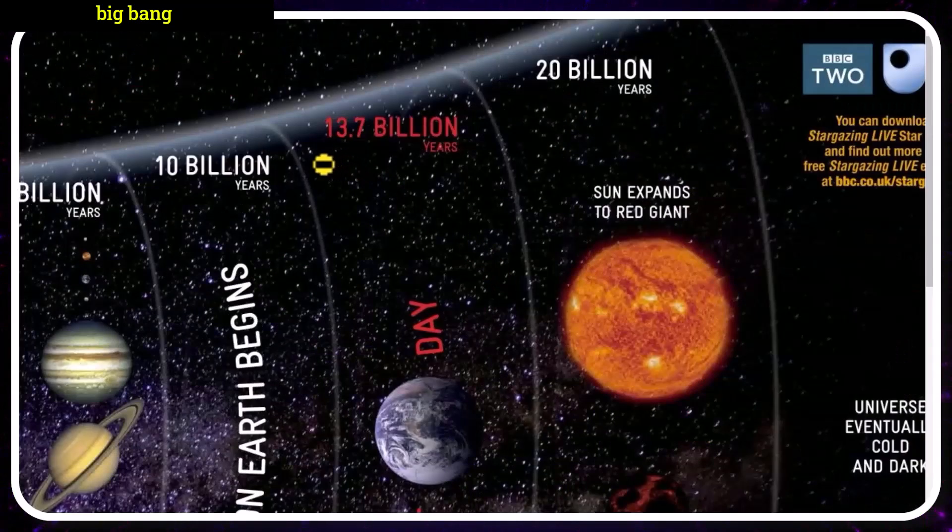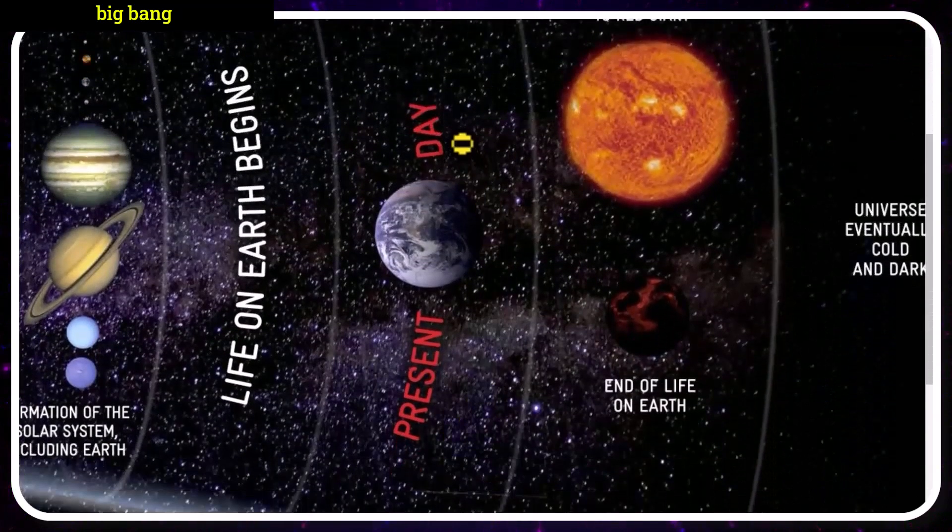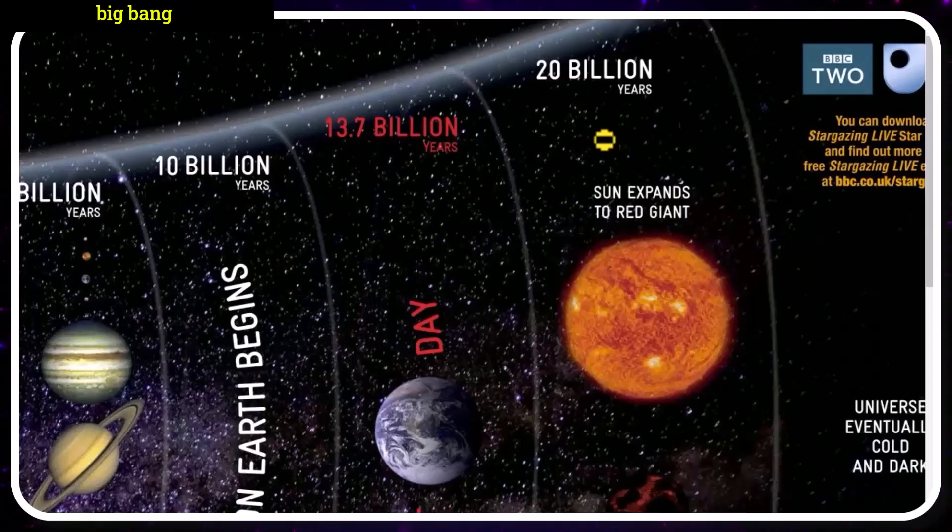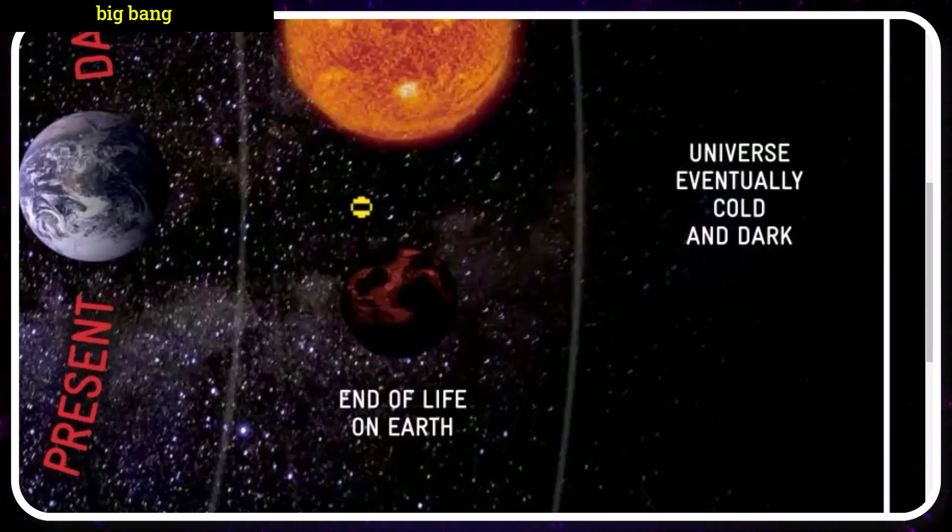Currently in our base reality, we are 13.7 billion years roughly from the beginning. This is present day. We expect a good 6-7 billion years before the Sun, our Sun, expands to be a red giant. At which point, it will likely be the end of life on Earth.